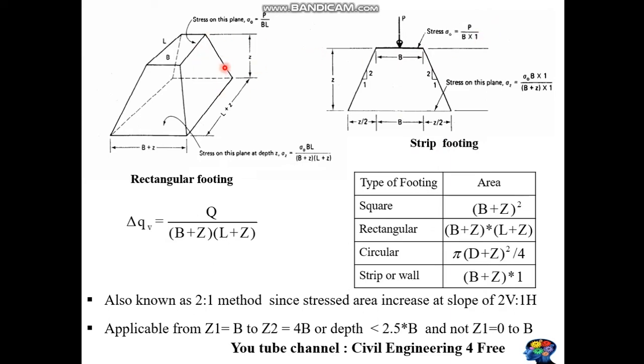For rectangular footing, the stress directly below the footing equals load divided by area. The area is width times length. At depth Z, stress is determined by Q divided by area, where area equals (B+Z) × (L+Z).